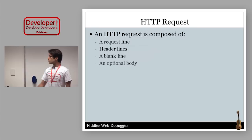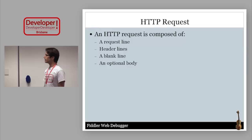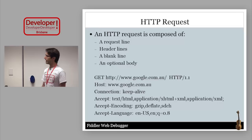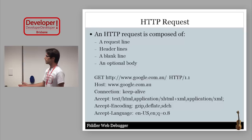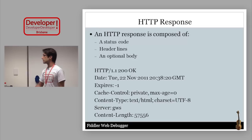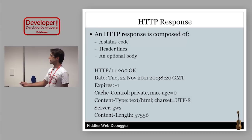An HTTP request is composed of a mandatory request line, optional header lines, an optional blank line, and a body. For example, a GET request to http://google.com.au with HTTP 1.1 specifies the host, and includes headers like Connection: keep-alive. In response, Google returns a status code 200, several header lines, and the body containing the Google homepage.